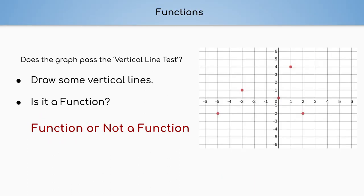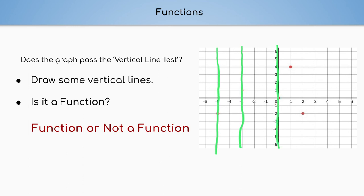Now we have a graph that just has points graphed — ordered pairs. Is this graph a function or not a function? Let's draw our vertical lines. This line goes through this point exactly once, this line exactly one point, exactly one point, exactly one point, and also exactly one point. So yes, this is a function. When our vertical line goes through exactly one point, it is a function.